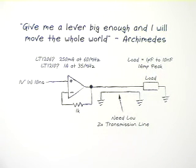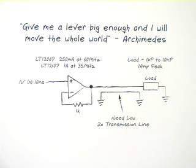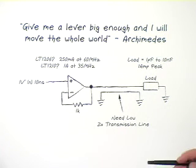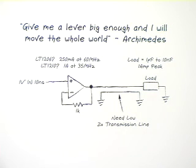But the requirement of fast means that you don't have time for reflections back and forth to get the right answer at the load. To make a long story short, if you want to get 1 volt at 1 amp to your load fast, you don't do it with a 50 ohm transmission line.